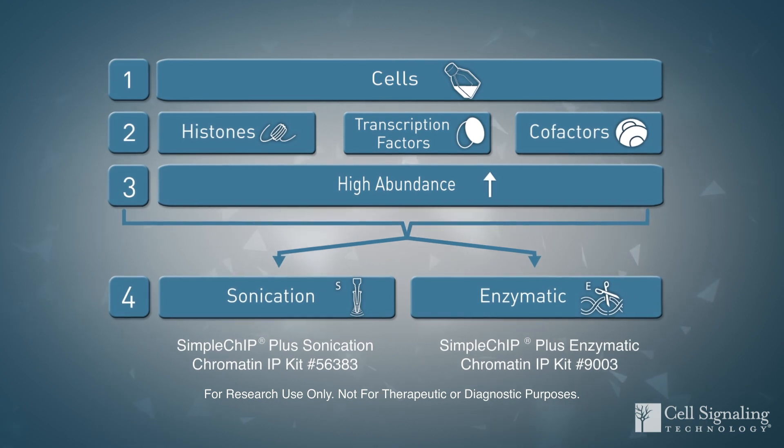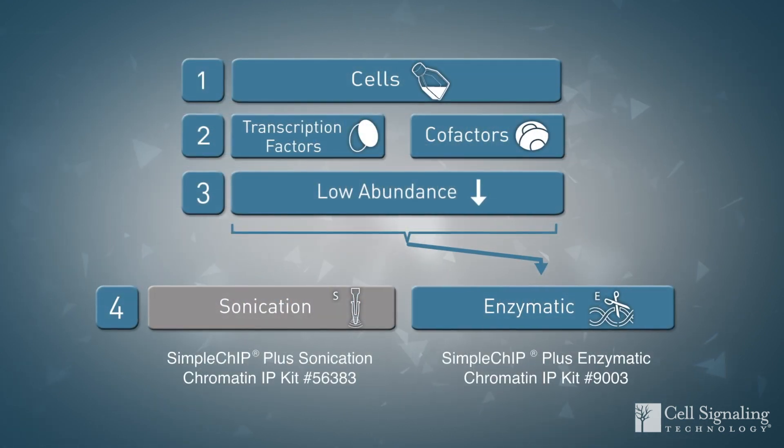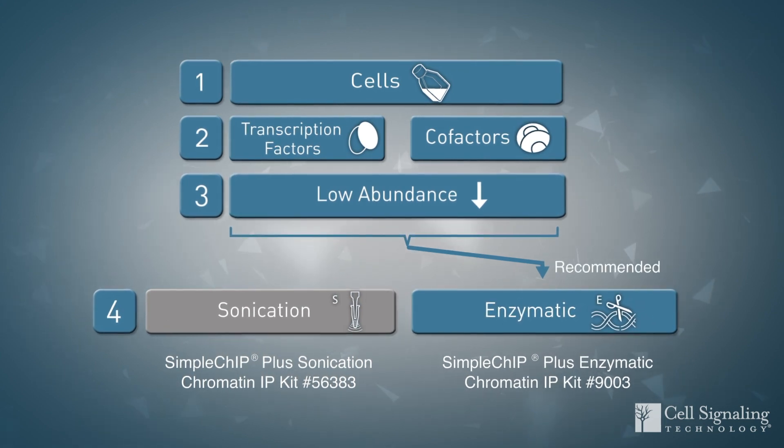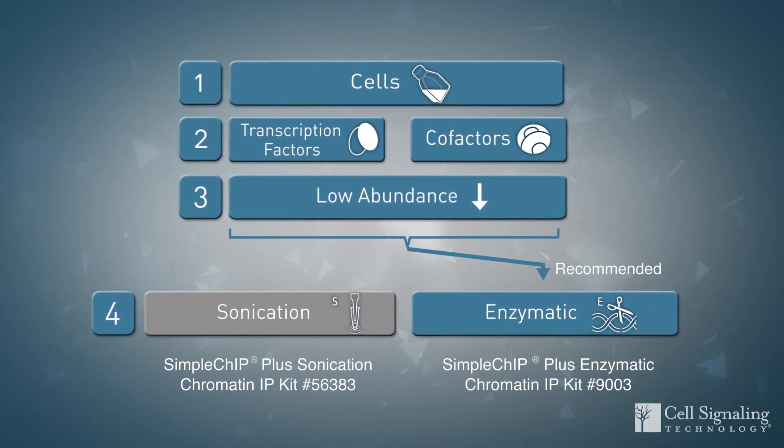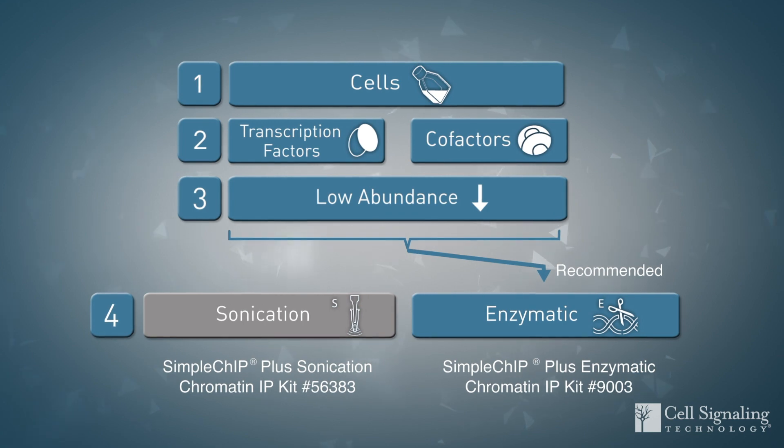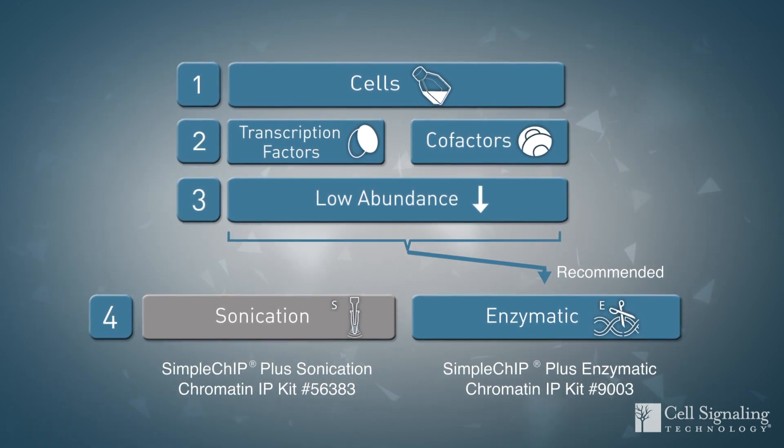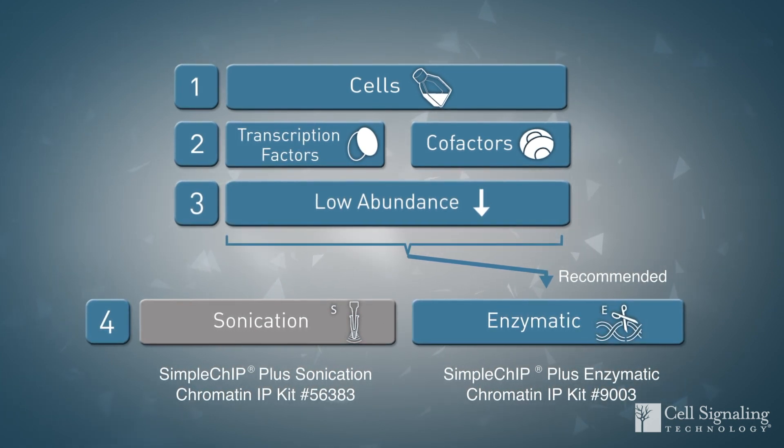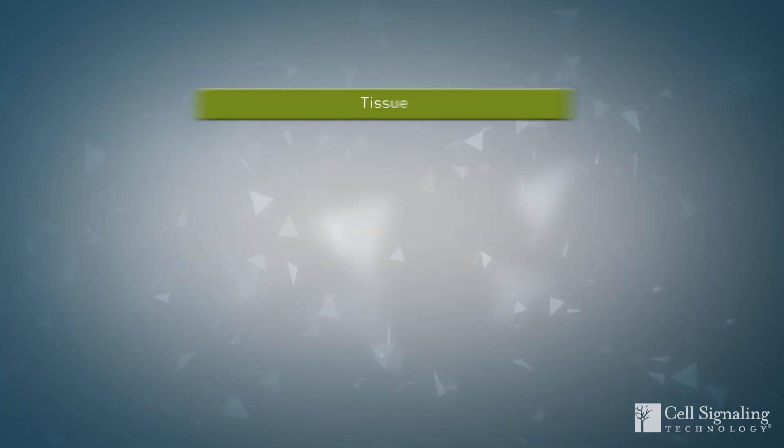While sonication can be used with low abundance transcription factors and cofactors, enzymatic digestion is preferred. The protein-DNA interactions for these proteins are more labile and may be prone to loss in sonication. For optimal results, we recommend using enzymatic fragmentation as a first choice.